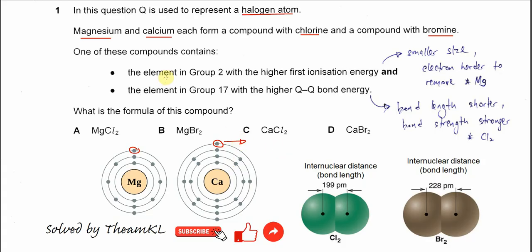So in this statement, because it mentions higher first ionization energy, it's referring to magnesium. More energy is needed to remove electrons from magnesium compared to calcium.